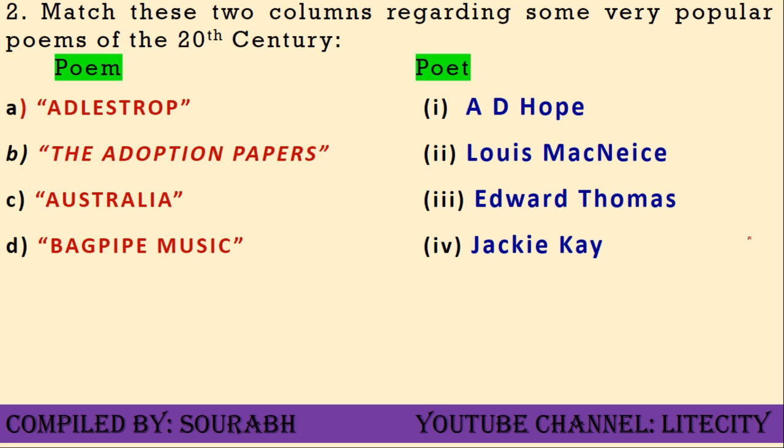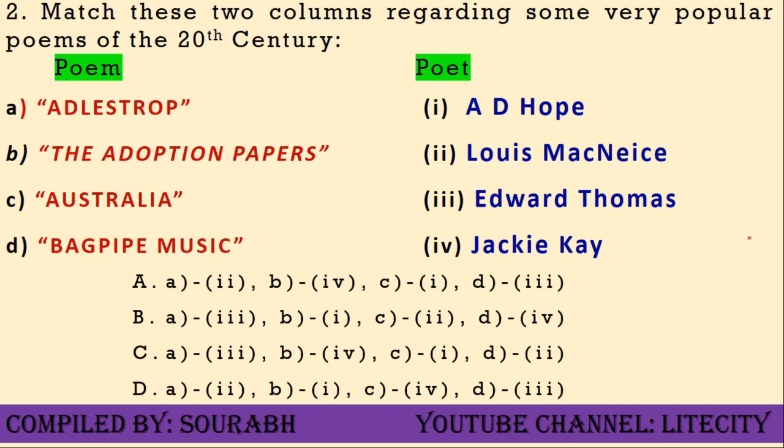Question two is a matching-columns question commonly asked in NET exams. You have to match poems in column one — Adlestrop, The Adoption Papers, Australia, and Bagpipe Music — with poets in column two: A.D. Hope, Louis MacNeice, Edward Thomas, and Jackie Kay. Some poems are from the early 20th century like Adlestrop, some mid-century like Bagpipe Music, and some from the later decades like The Adoption Papers.